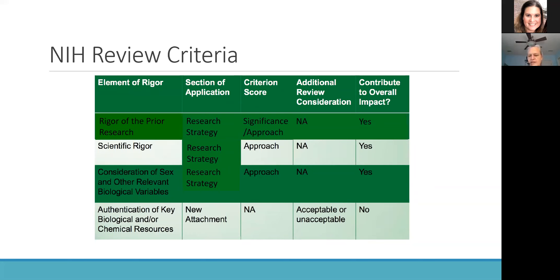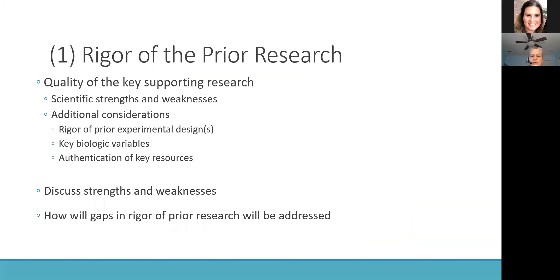Let's look at each of the four aspects in more detail in the context of real-world examples. Starting with the first point: rigor of the prior research. As noted, in 2019 the NIH updated their guidance on the significance section to indicate that grants need to frame their supporting evidence in the context of rigor. Applicants should discuss the strengths and weaknesses of the prior research and how they're going to address those gaps.